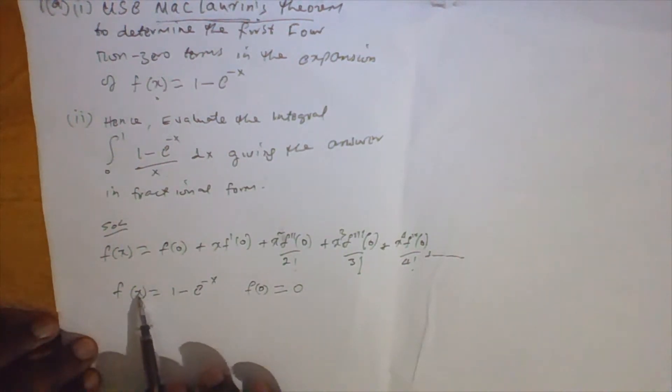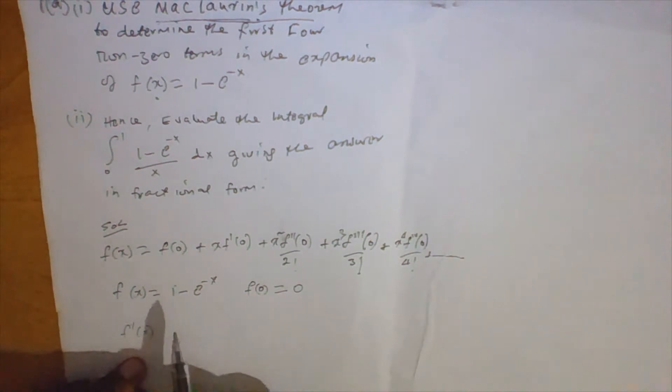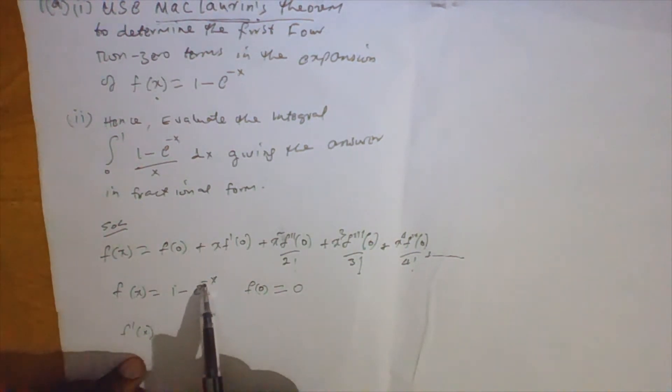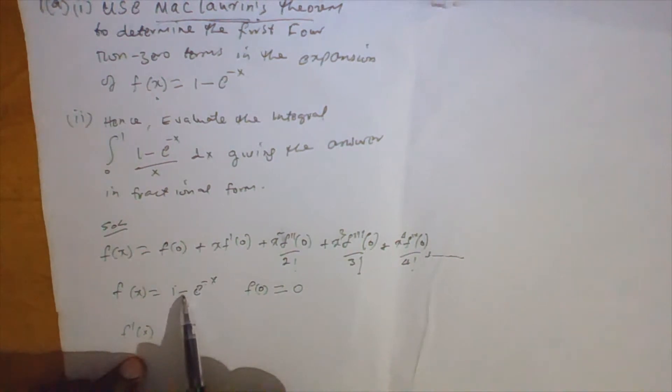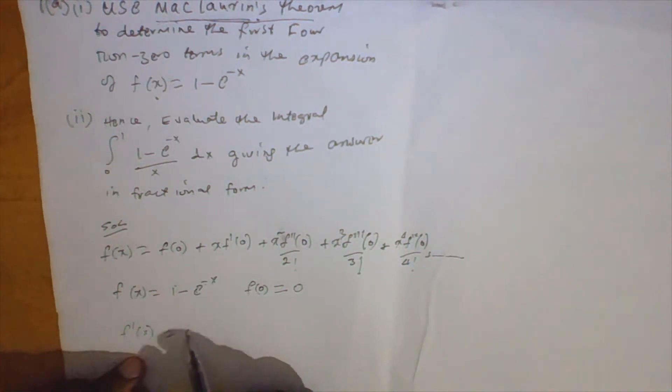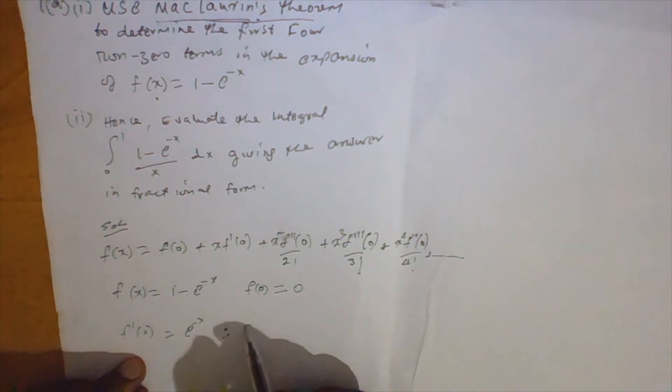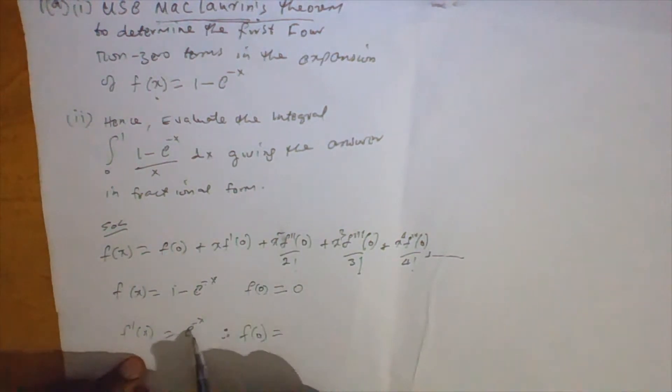We differentiate f of x. When we differentiate 1 minus e to the negative x, the derivative of the constant is 0, and differentiating negative e to the negative x gives us positive e to the negative x, since the coefficient is negative 1 times negative 1. So f prime of x equals e to the negative x, and f prime of 0 equals 1. Differentiating again, f double prime of x equals negative e to the negative x, so f double prime of 0 equals negative 1.